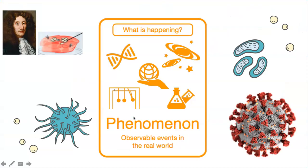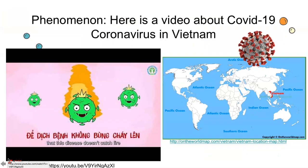Scientists look at phenomena and try to understand them. Phenomena are observable events in the real world, like the maggots growing on meat. What observable events do you notice happening in the real world? How about COVID-19? What have you been observing about this phenomenon of COVID-19 occurring right around you right now? Watch this video that was made across the world in the country of Vietnam and think about why this video was made so far away from us.